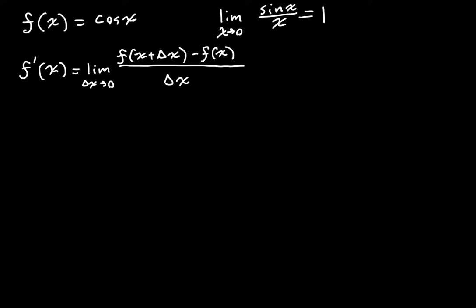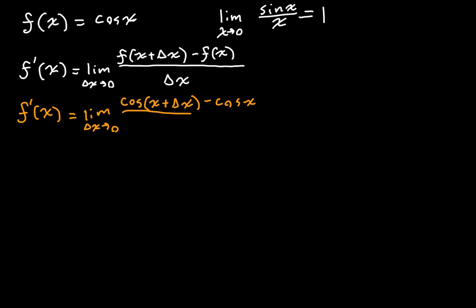So let's start plugging things in. f prime of x for our function cosine of x is going to be the limit as delta x goes to zero of cosine of x plus delta x minus cosine of x, over delta x. And this isn't quite done — notice if we just make delta x equal to zero, then we have zero over zero, which is indeterminate. So that's not an answer that we can have.